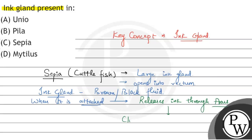This forms clouds of brown or black water. The attacking animal gets confused by these clouds, and Sepia is able to run away and escape. So this is the main function of the ink gland present in Sepia — ink opens in the rectum, releases through the anus, forms brown or black water clouds, confuses the predator, and Sepia escapes.